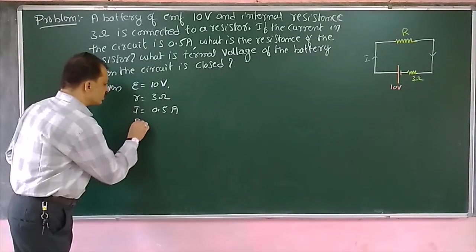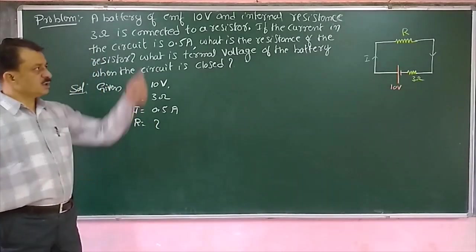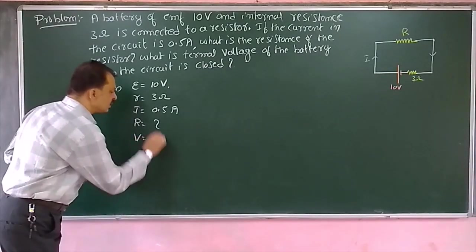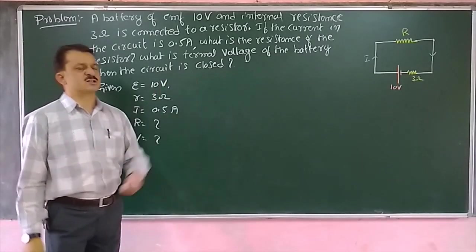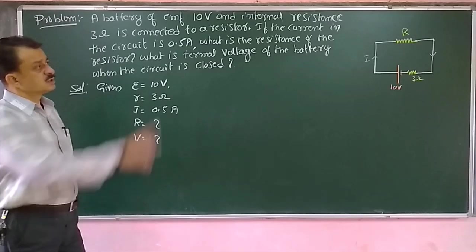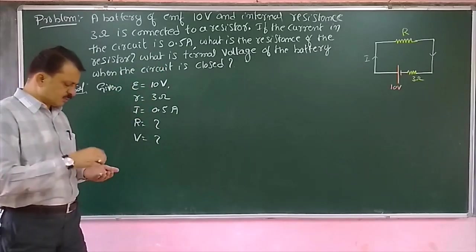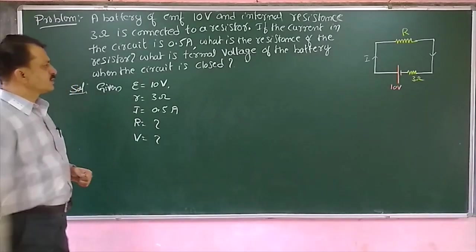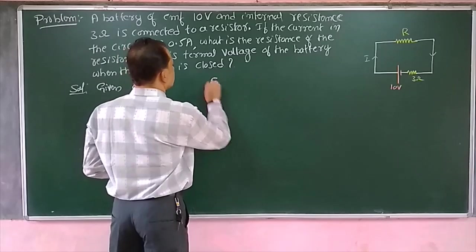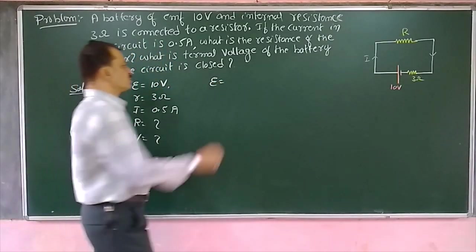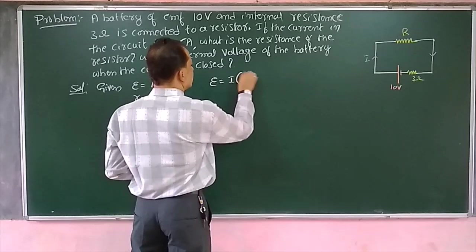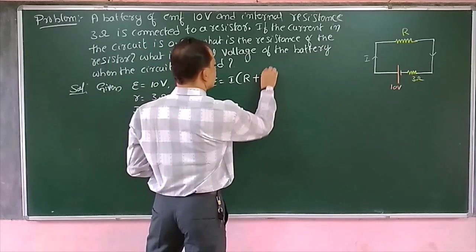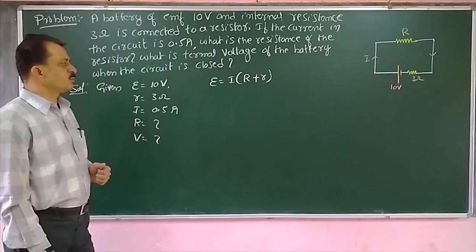Now what we are going to calculate: we are going to calculate what is the external load resistor, and what is the terminal voltage — that means when the current starts to flow, what is the voltage drop across the load resistor or the terminals of the cell. We are familiar with the expression for EMF: EMF is equal to the current into sum of the two resistors — one is the external resistor and another is the internal resistor.